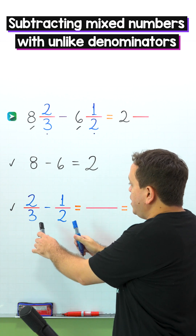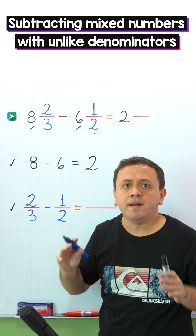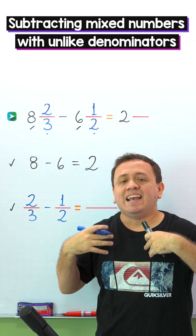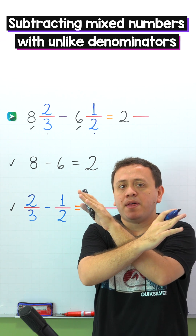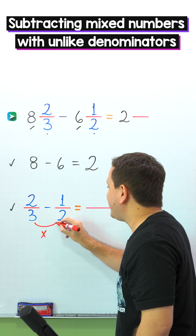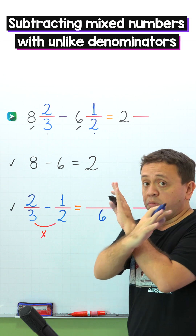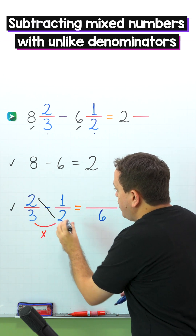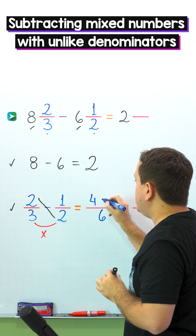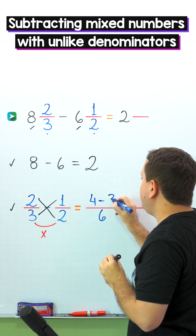These two fractions have different denominators — we have 3 on the left and 2 on the right. There are several methods to subtract fractions with unlike denominators. However, I love to use the cross multiplication method, or the butterfly. In this method, we'll start by multiplying the denominators, and 3 times 2 gives us 6. Then we cross multiply. On this side, we have 2 times 2, and 2 times 2 is 4. We continue with the minus sign. On the other side, we have 3 times 1, and 3 times 1 gives us 3.